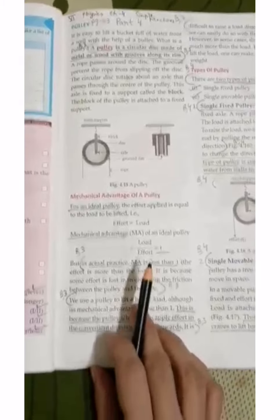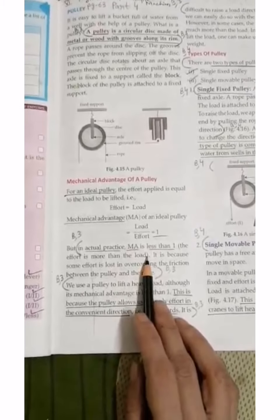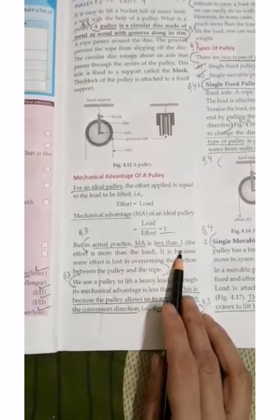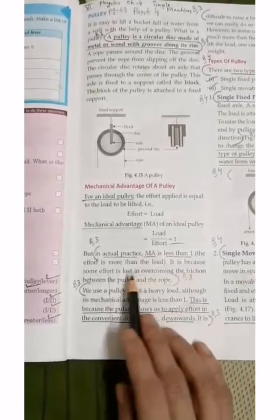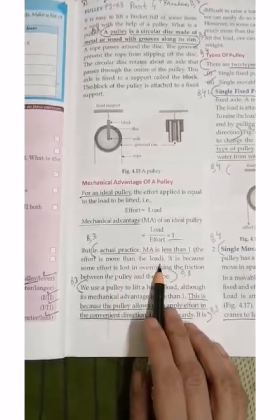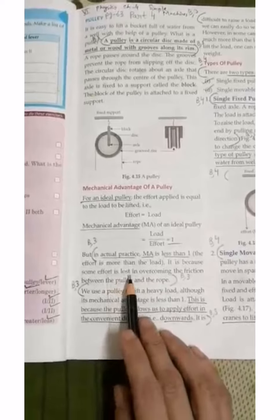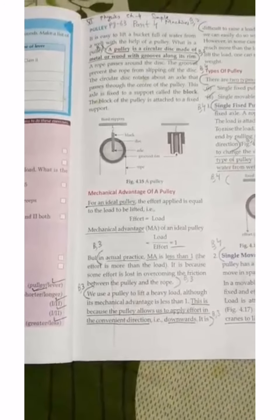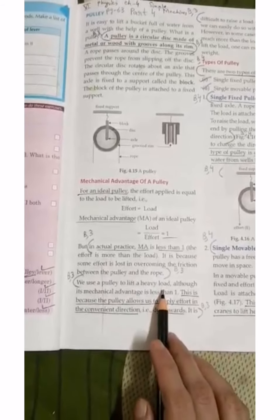But in actual practice, mechanical advantage is always less than 1. This is because effort is more than load. Some effort is lost in overcoming the friction. We use pulleys to lift heavy loads.